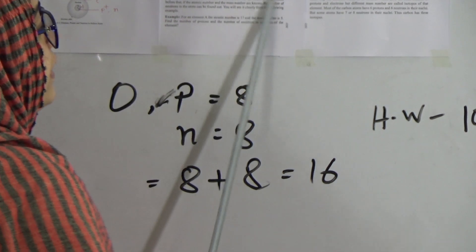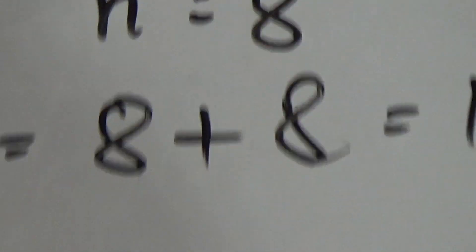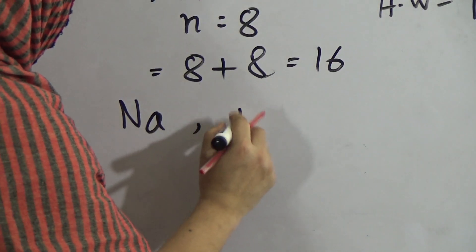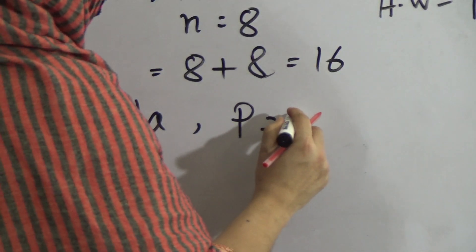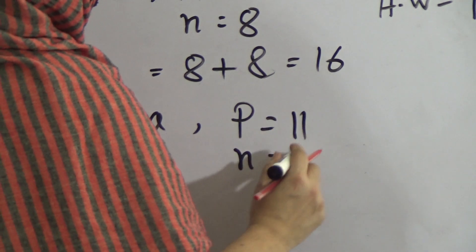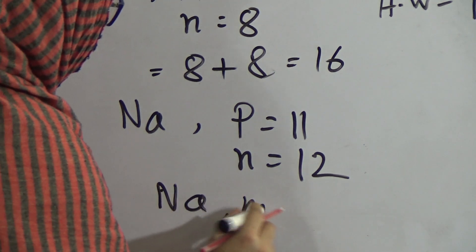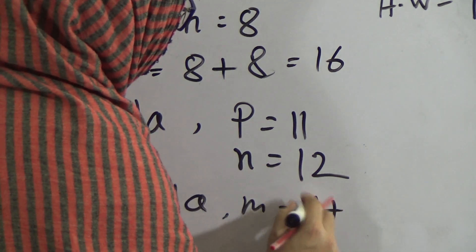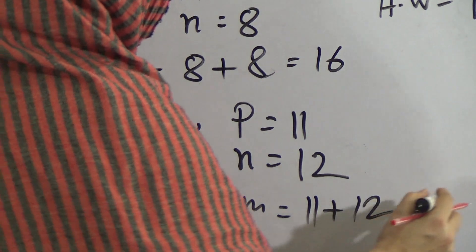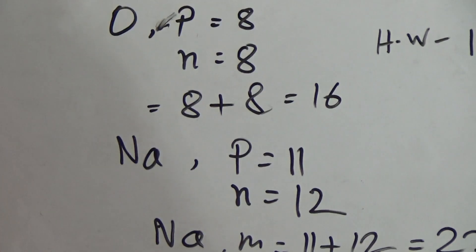In the case of sodium, there are 11 protons and 12 neutrons. So the mass number of sodium will be 11 plus 12, that is 23. Mass number indicates the total number of proton number and neutron number.